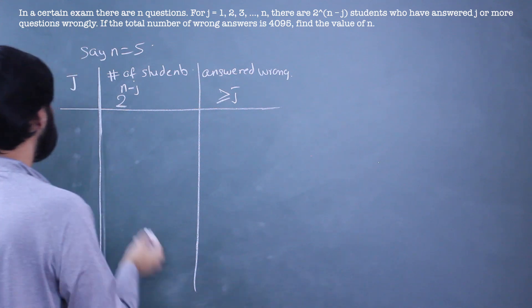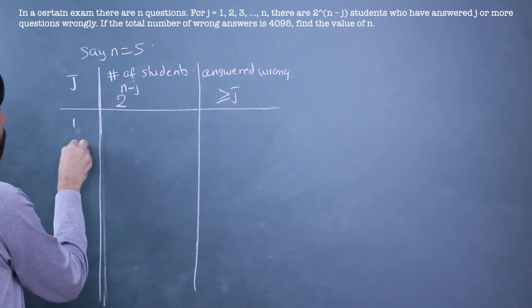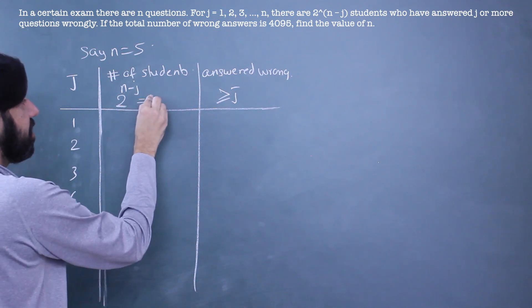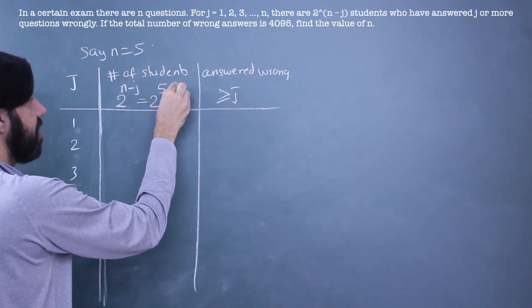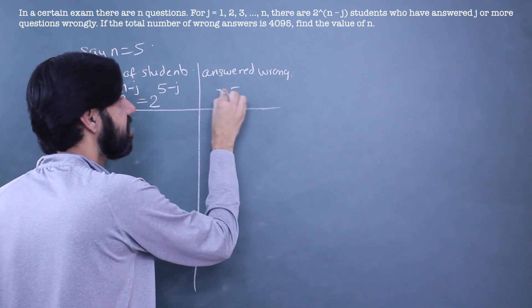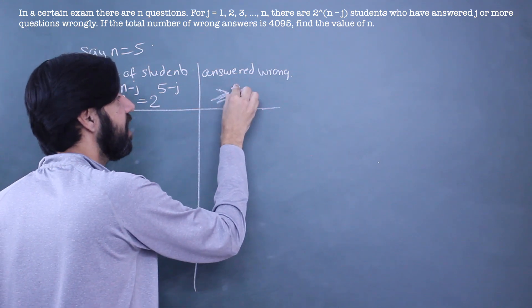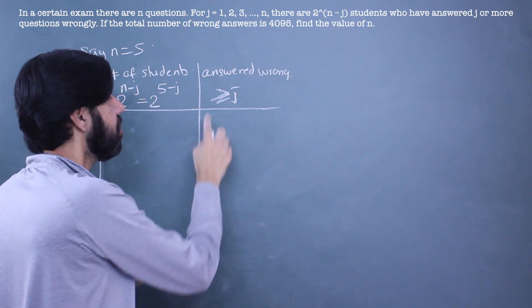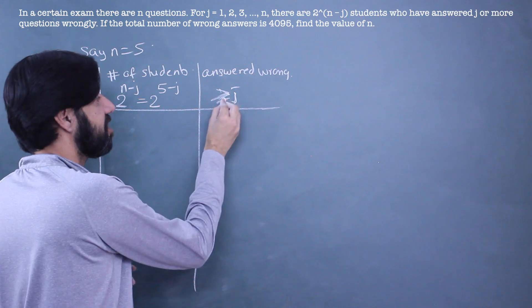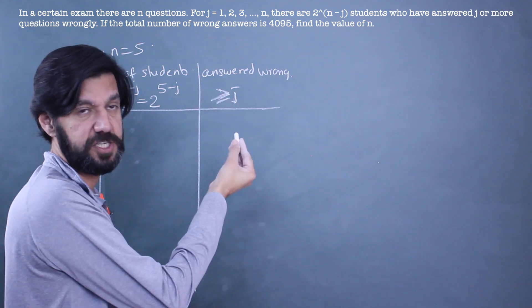So the values that j can take are 1, 2, 3, 4, 5. And the number of students in this case will become 2^(5-j). And what are these students? These are students who are answering j or more than j wrong. There's a difficulty at each stage - this is j or more than j wrong.